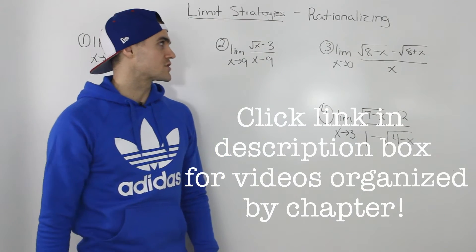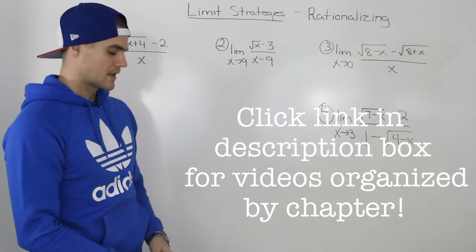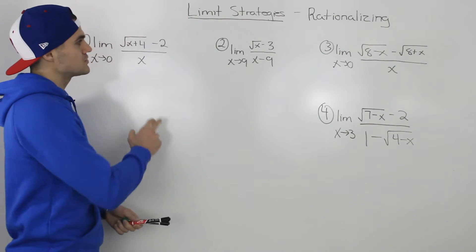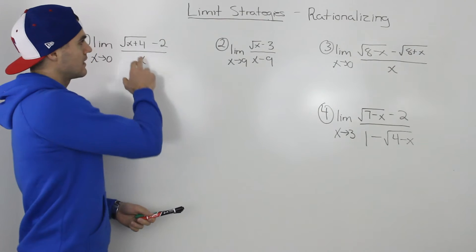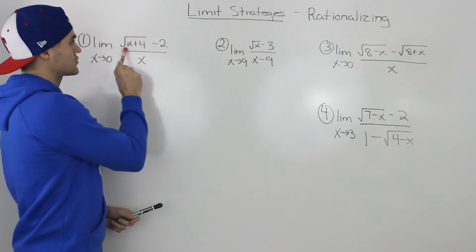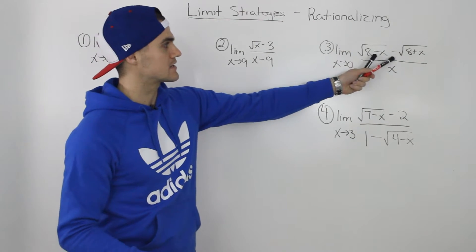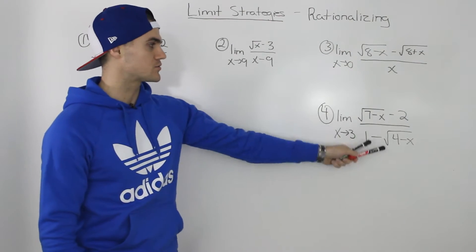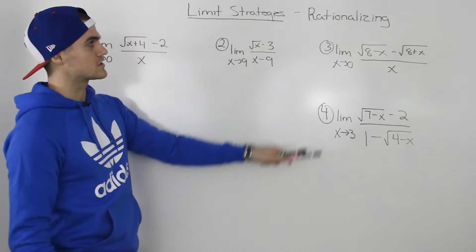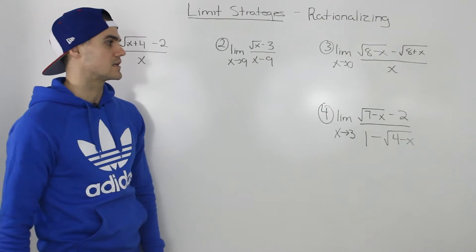Moving on to the next strategy for solving limits, we're going to talk about rationalizing. Rationalizing is a strategy that's used whenever you have a limit that usually has a square root. Notice here how we have a square root of x plus 4, square root of x, square root of 8 minus x, square root of 8 plus x. For all these four examples, we're going to be using the strategy of rationalizing to solve these limits.